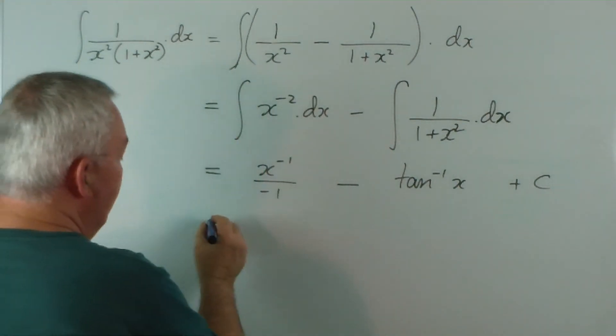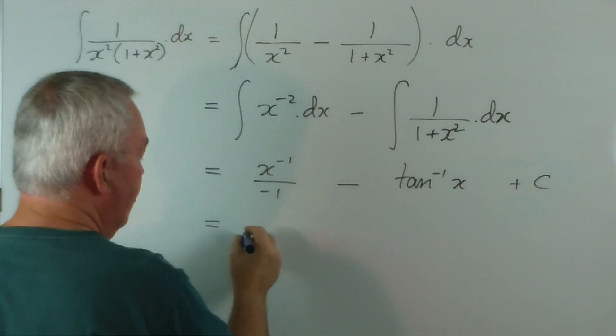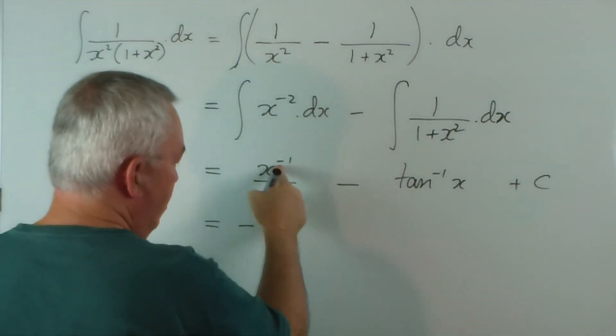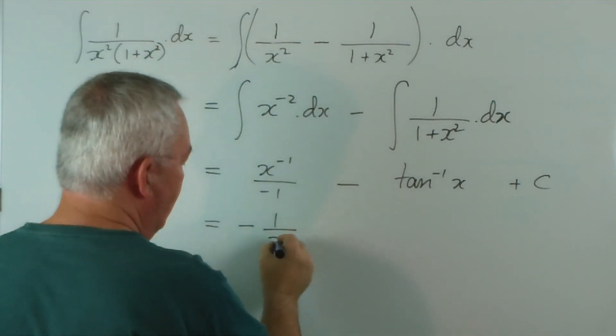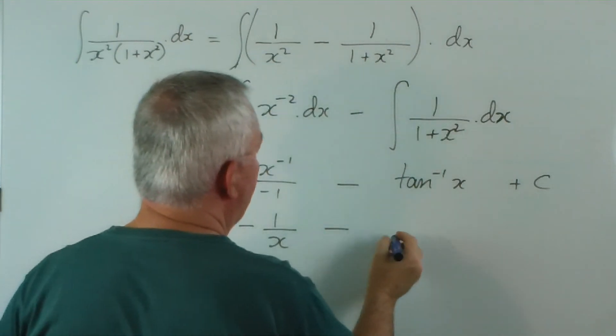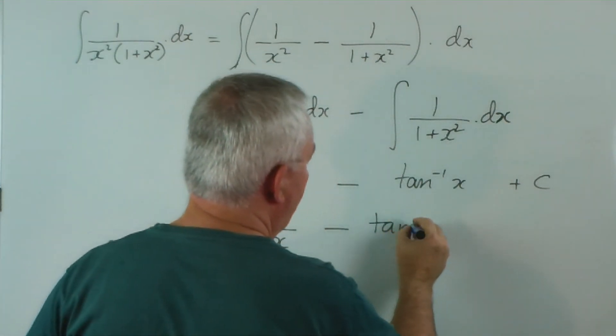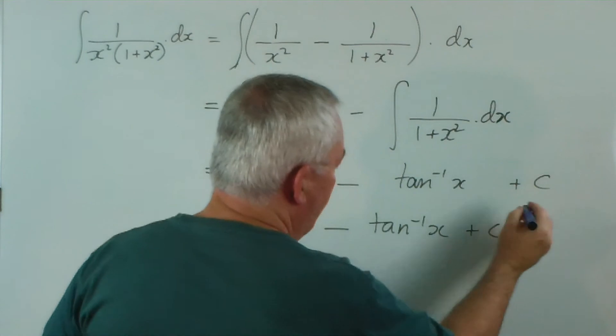And of course, this we would simplify. The negative sign would come up the front and that negative index would put the x on the bottom. There it is.